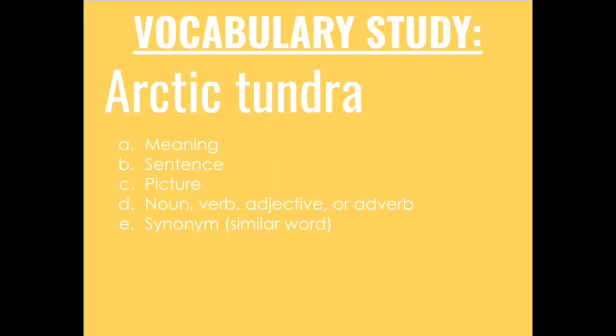Now onto our vocabulary study. On a piece of paper or in your notebook, you're going to first write the words arctic tundra. Then look back at the text to find the meaning. Then write the sentence where the word is highlighted in yellow. Then draw a picture of the word. Then tell me whether the word is a noun, verb, adjective, or adverb. And then give me a synonym, or a similar word.